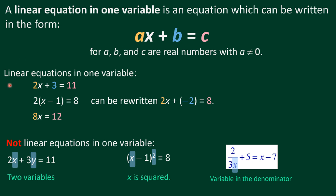Let's have an example of a linear equation in one variable. For instance, 2x plus 3 equals 11. Here, A is 2, B is 3, and C is 11 — those are our real numbers. The one variable here is x.